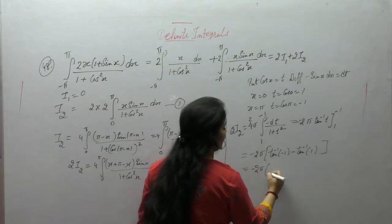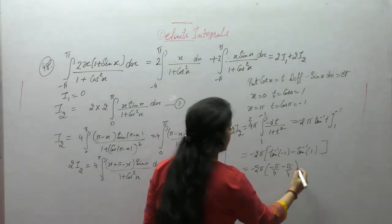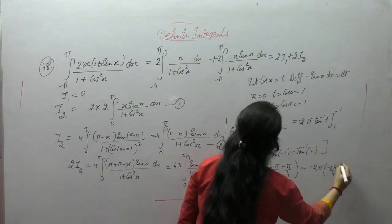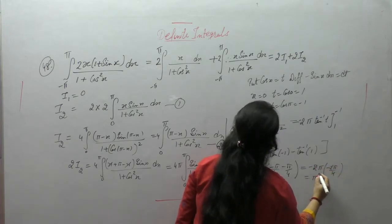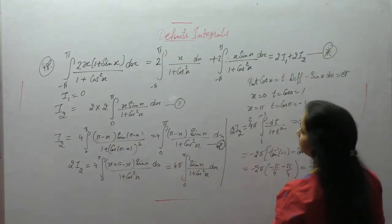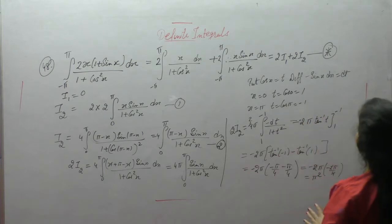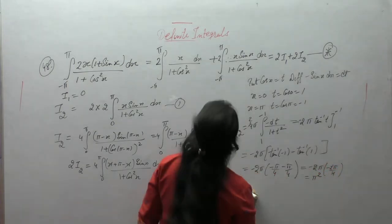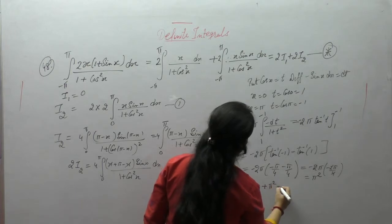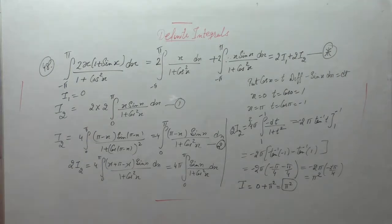tan⁻¹(−1) = −π/4 and tan⁻¹(1) = π/4. So the expression becomes −2π times (−π/4 − π/4) = −2π times (−π/2) = π². Therefore I1 = 0 and I2 = π², giving the final answer π².